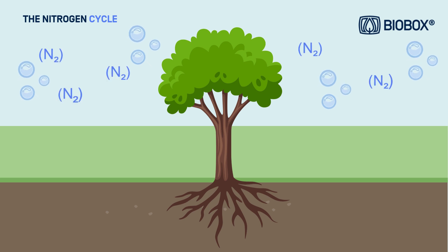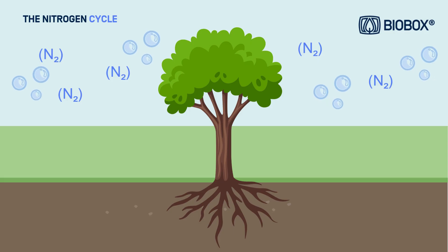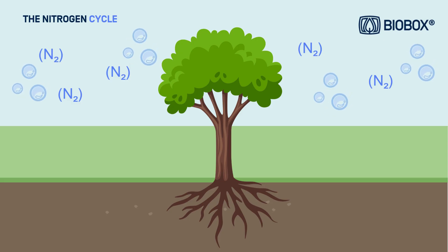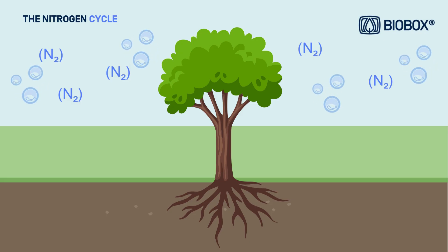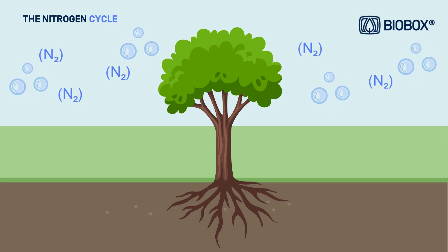Nitrogen is an essential element for life. In fact, 78% of the air we breathe is nitrogen. However, there's a problem: most living organisms cannot use it directly. So, how do we obtain it and transform nitrogen into usable forms?